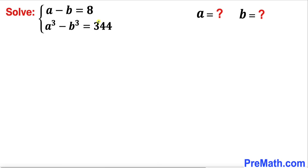Welcome to pre-math. In this video we are going to solve this given system of equations: a minus b equals 8, and a cubed minus b cubed equals 344. In other words, we are going to find the value of a and b.